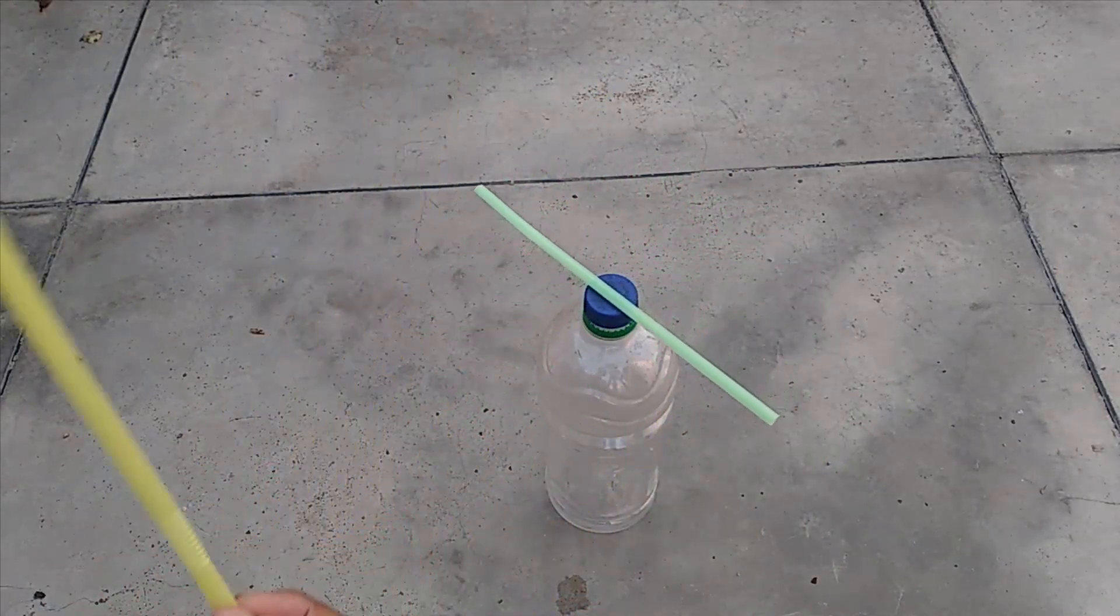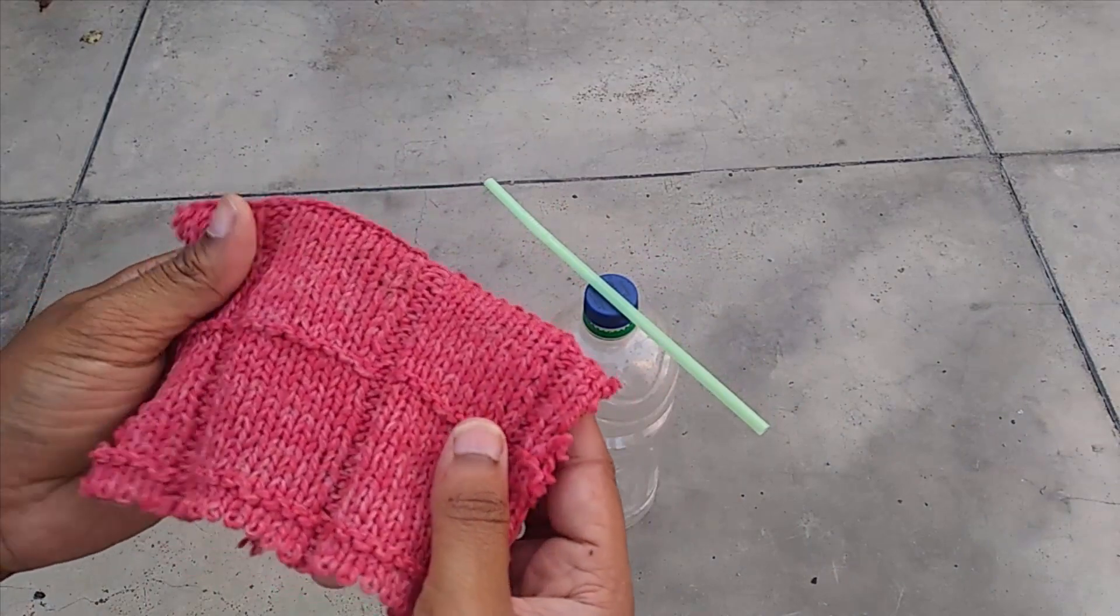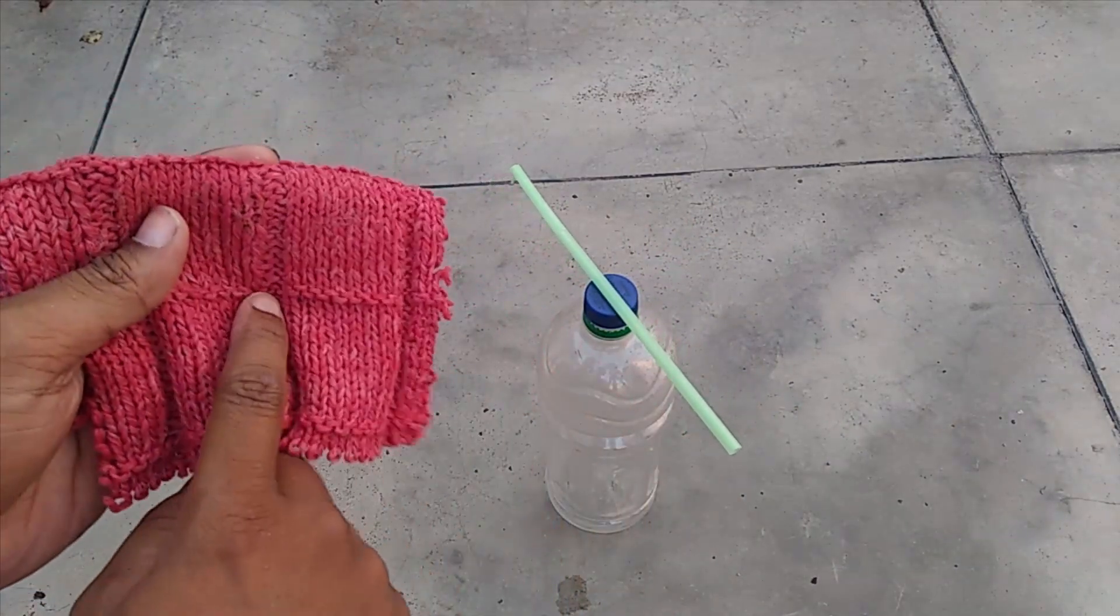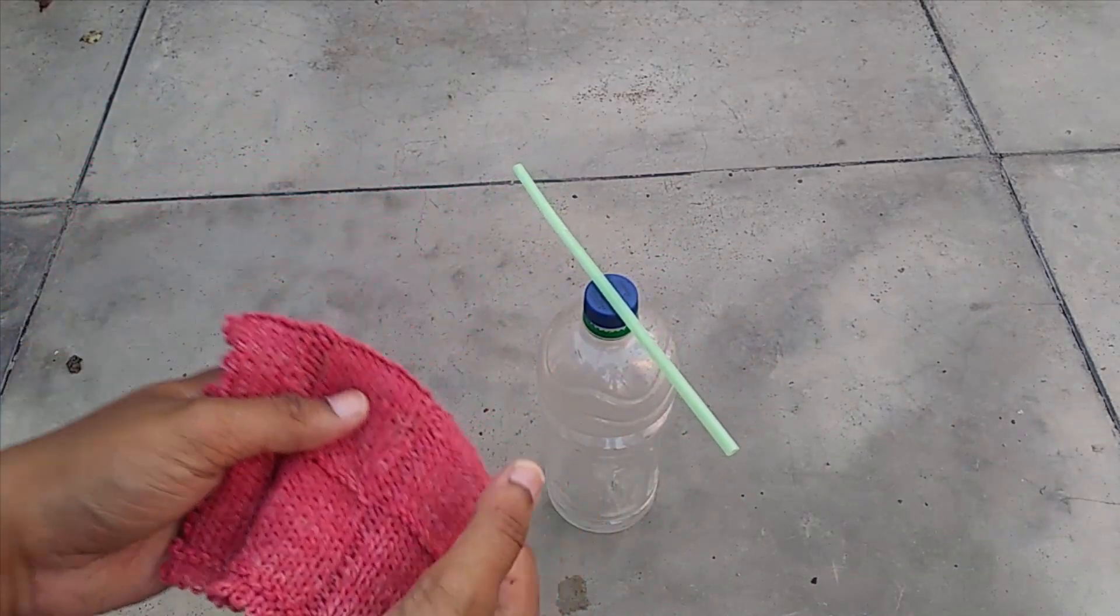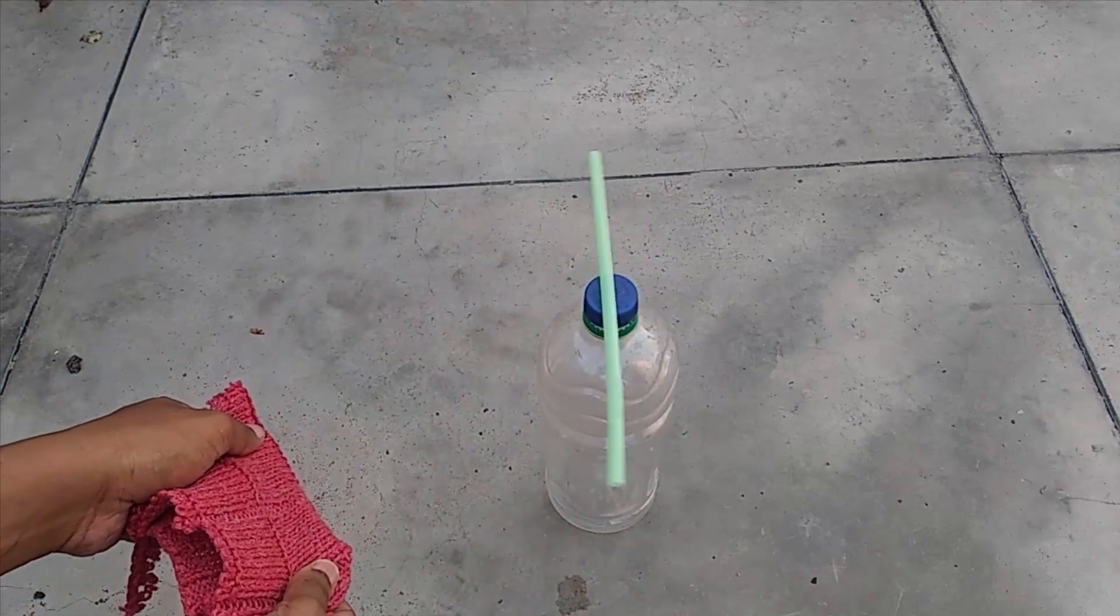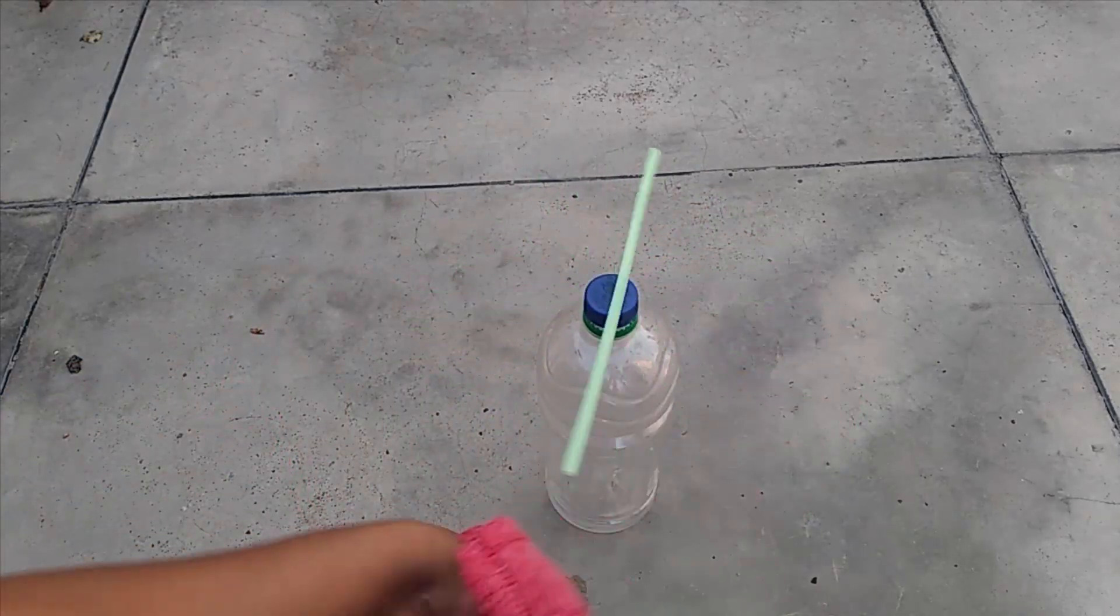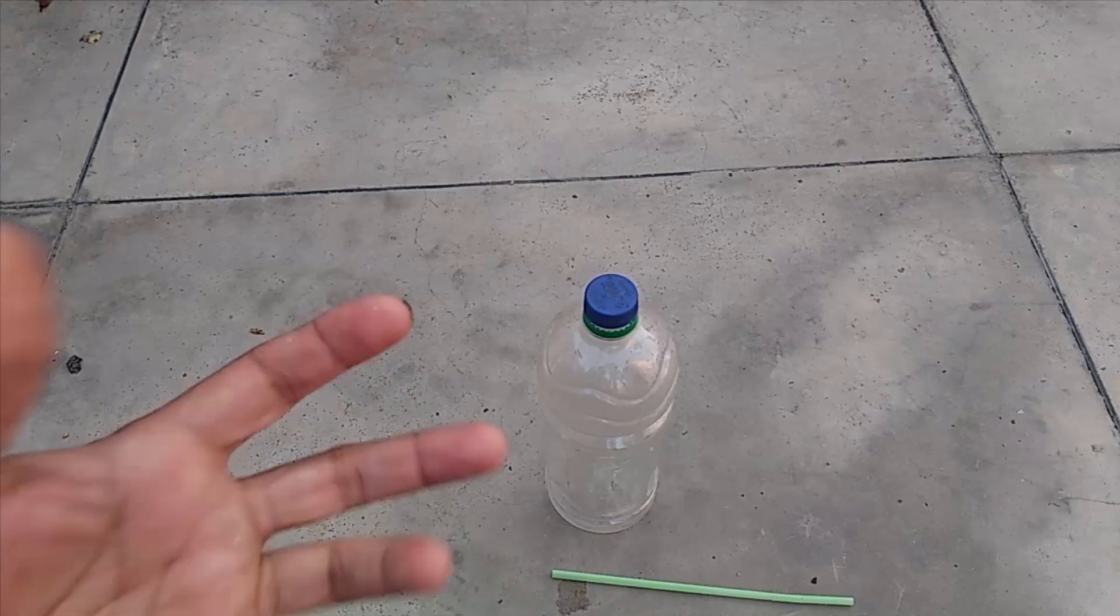Same type of charges repel each other. Since this straw contains positive charge, this woolen cloth contains negative. When we bring them together, they will start attracting each other.